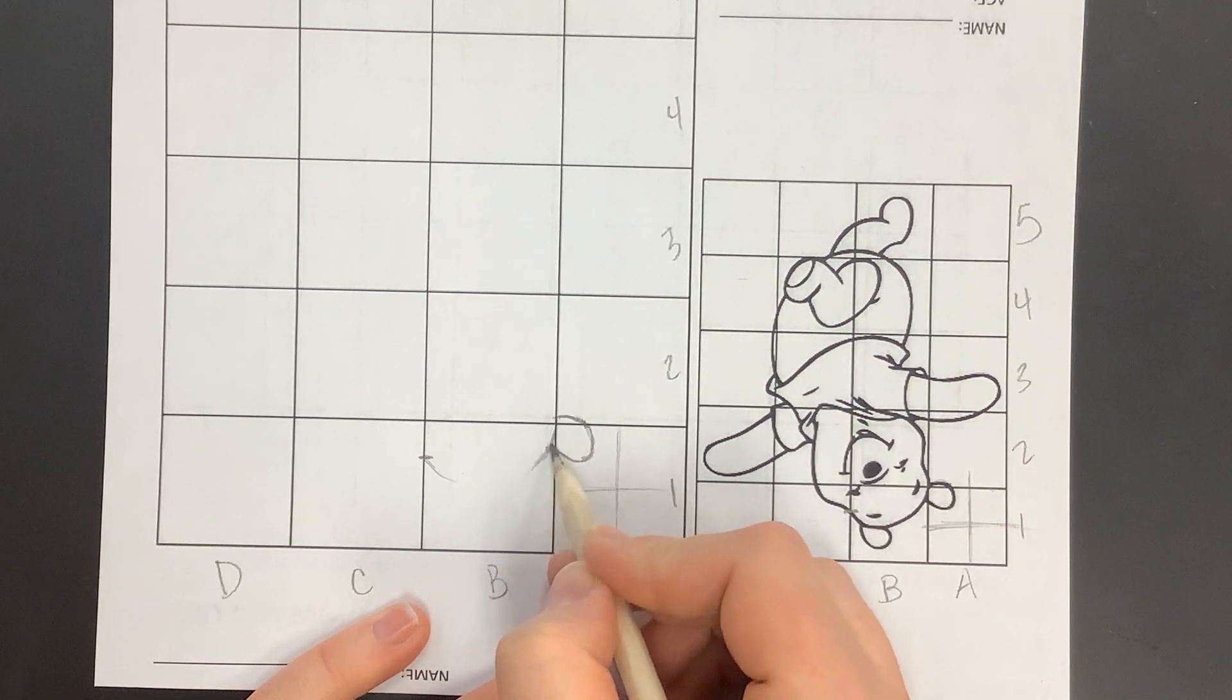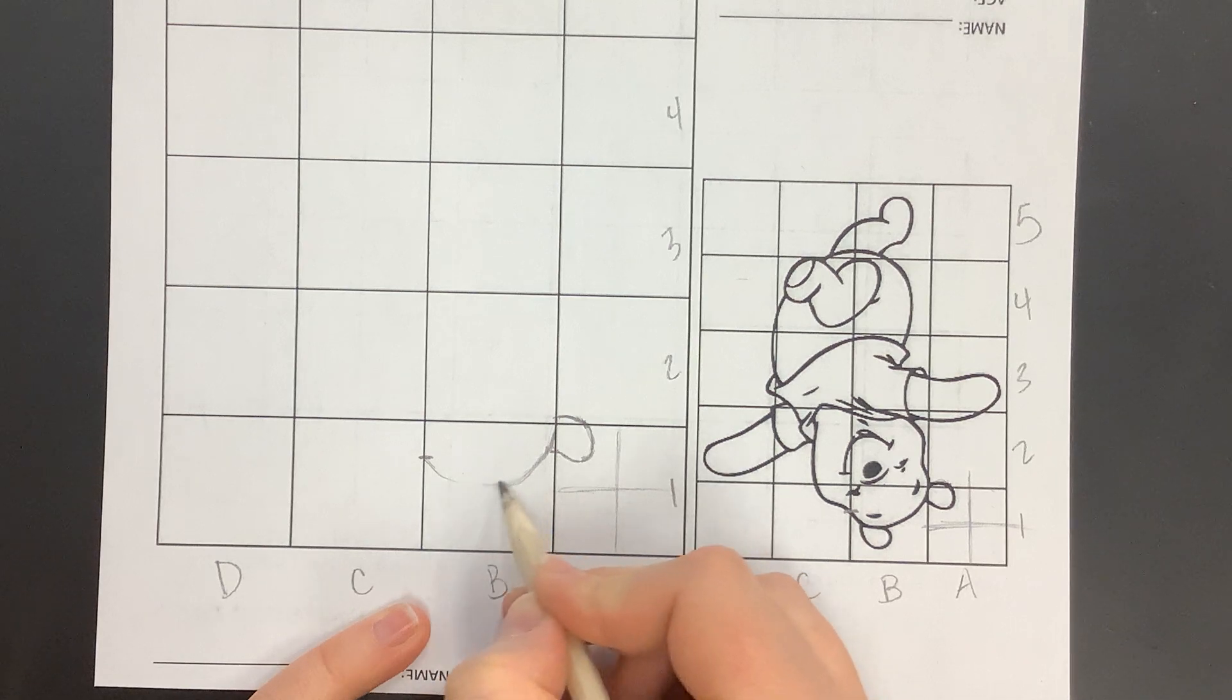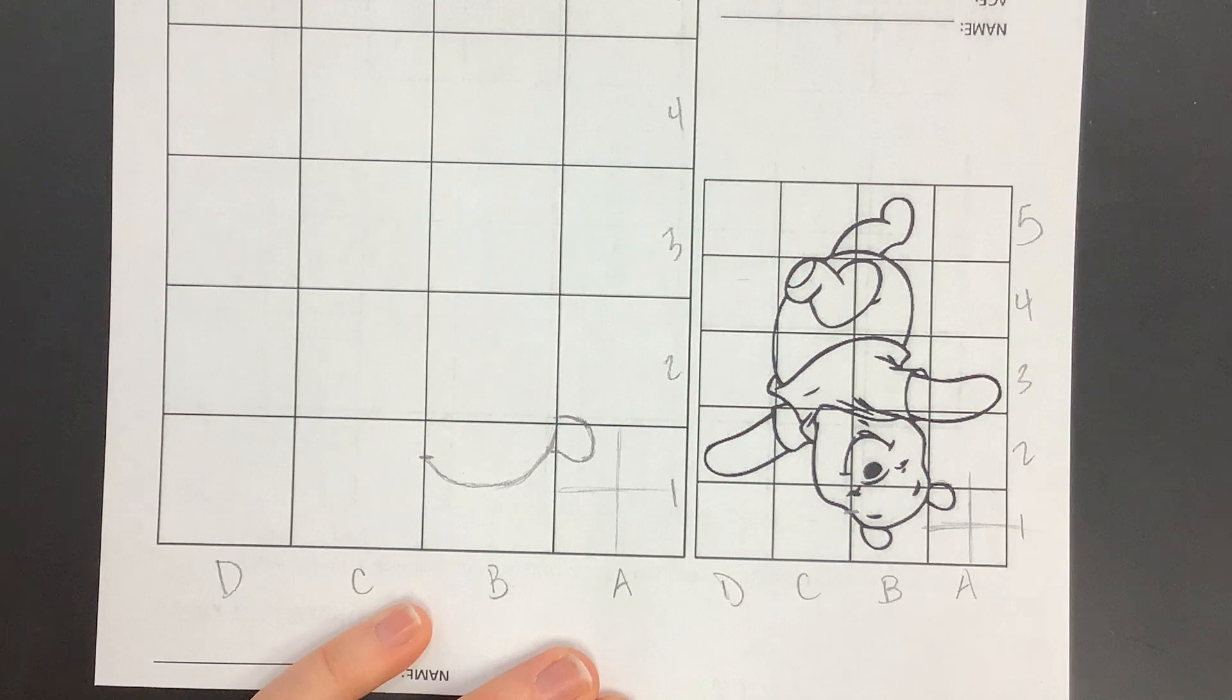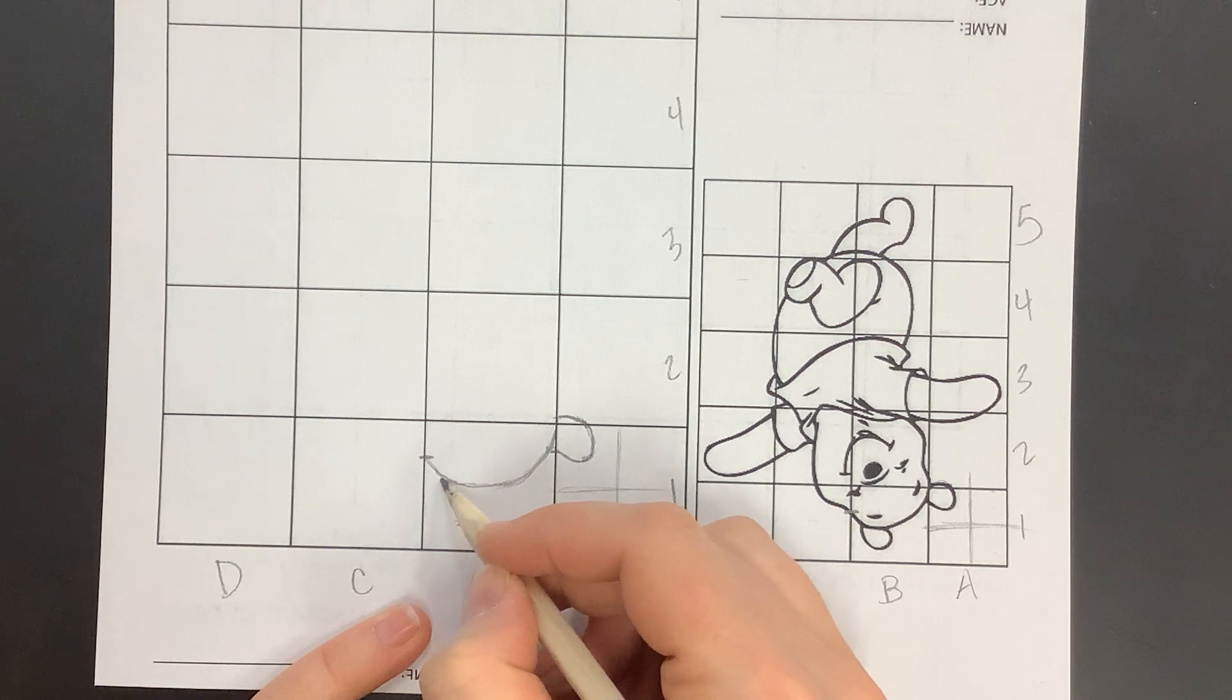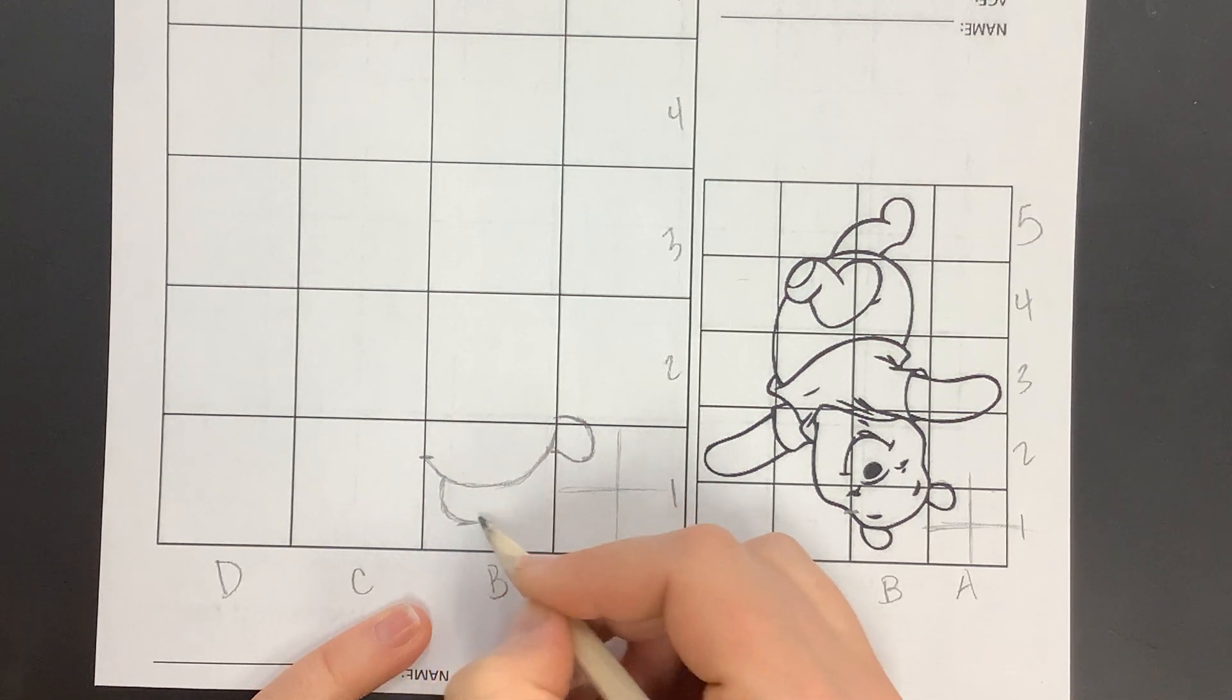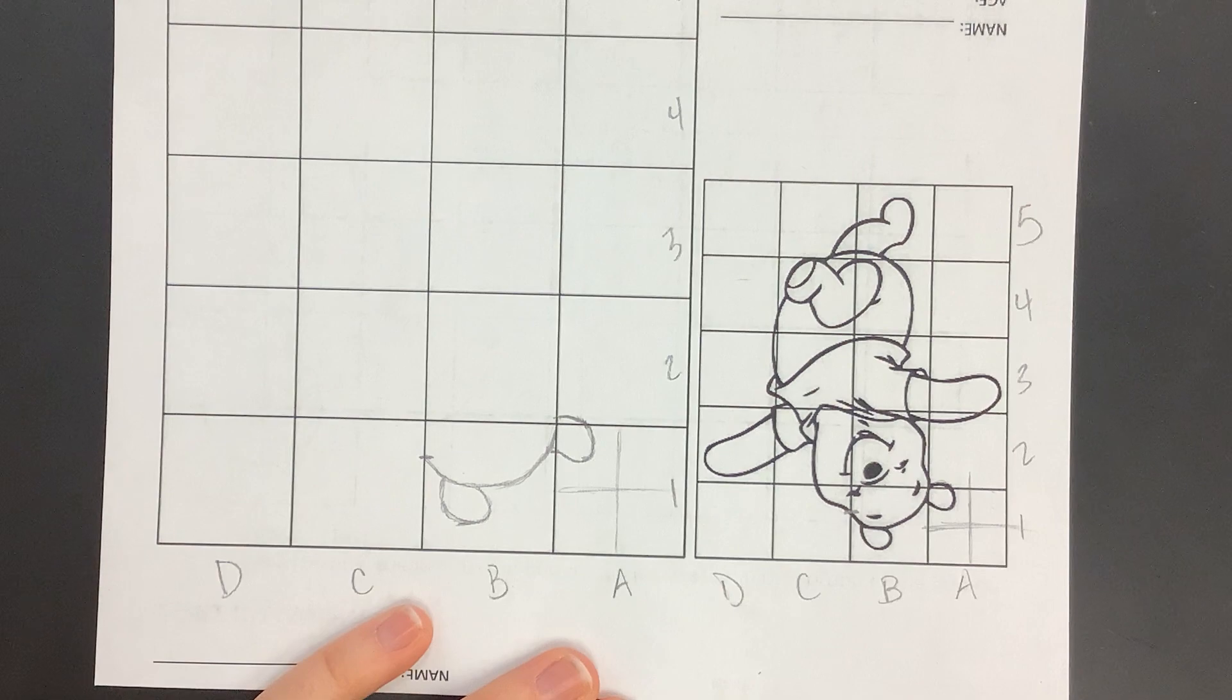If you do the Winnie the Pooh, that'll give you an opportunity to reach for that A. It needs to be done at a proficient level to get the A, but I'm just sharing that with you so that you understand the levels of complexity here. If you want to practice first, you're welcome to practice first on those other ones, but ultimately the goal is to get to this final Winnie the Pooh grid.